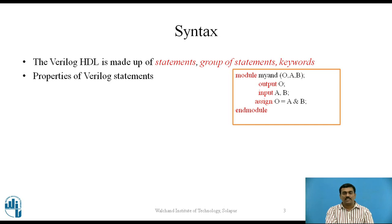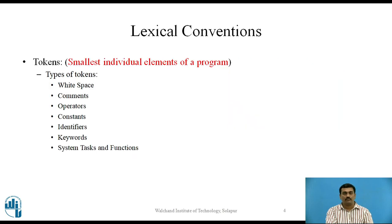Let us see properties of Verilog statements. Similar to C programming language, they are composed of tokens. Statements within the group are terminated with semicolon. The basic lexical conventions used by Verilog HDL are similar to those in C programming language. Verilog contains a stream of tokens. Tokens are the smallest individual element of a program.